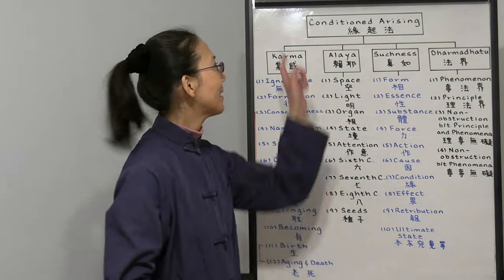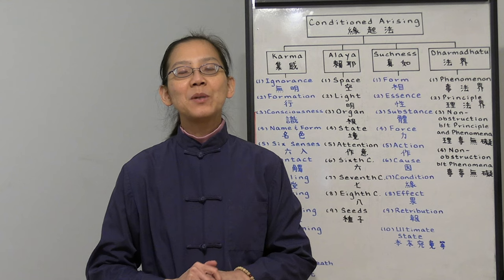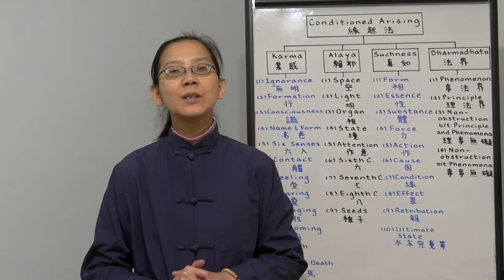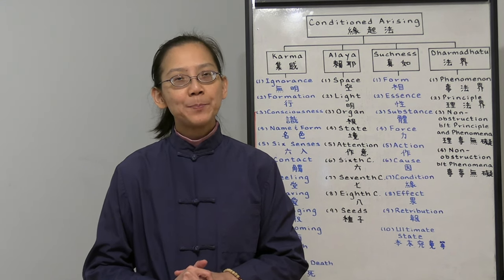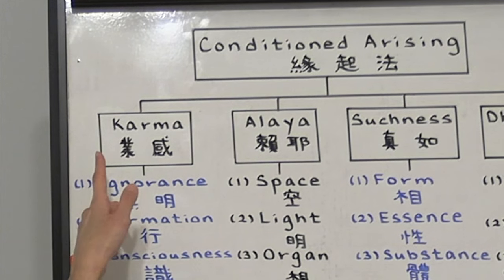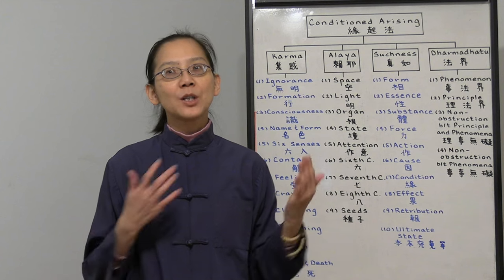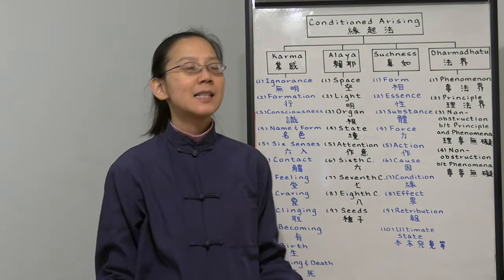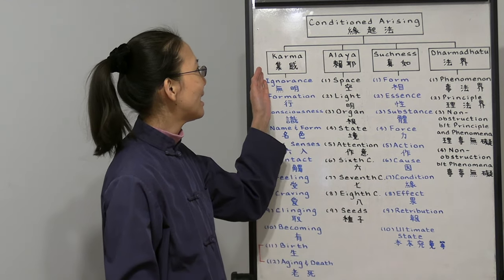Today we are going to talk about condition arising. We will discuss four kinds of condition arising according to the Huayan school of Buddhism. The first condition arising is based on karma. Everything is about our good deeds and bad deeds. That's why we have reincarnation.